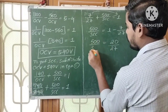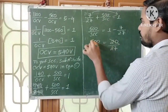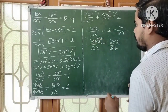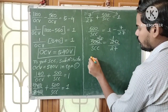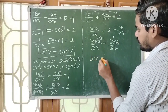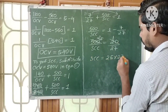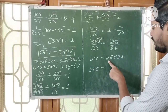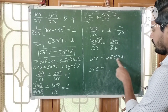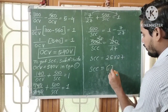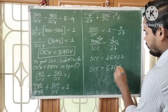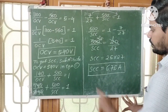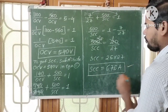So 500/SCC = 20/27. By cross multiplication: SCC = 500 × 27/20 = 25 × 27 = 675 amperes. Therefore, short circuit current SCC = 675 amperes.